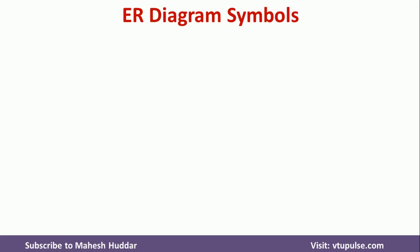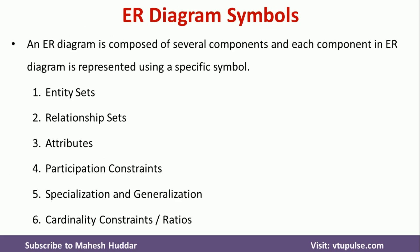Now we will try to understand the different symbols used in ER Diagram. ER Diagram contains several components, each represented with different symbols. These components include Entity Set, Relationship Set, and Attributes. Along with that, we have constraints like Participation Constraint, Specialization and Generalization Constraints, and Cardinality Constraints and Ratios. We will try to understand those symbols one by one.